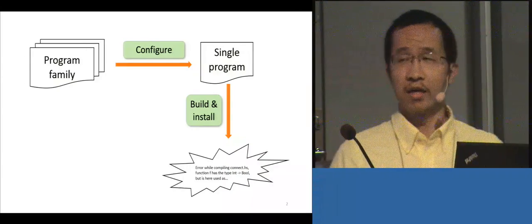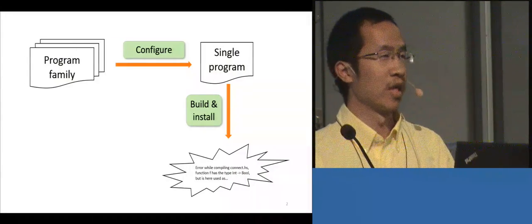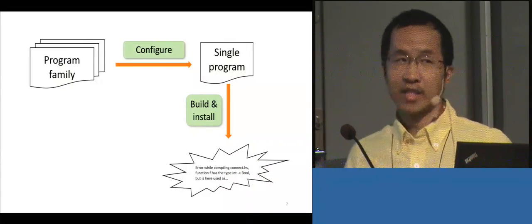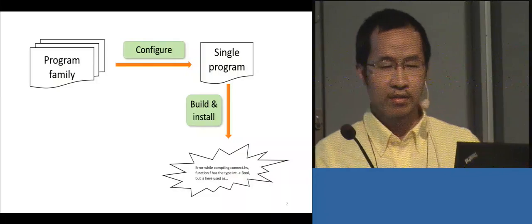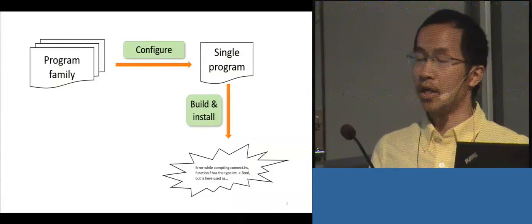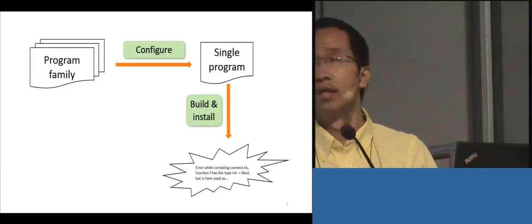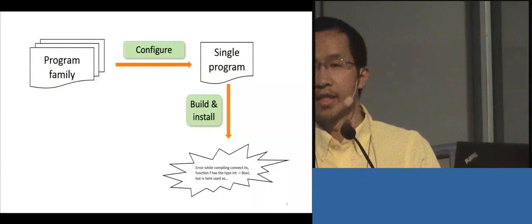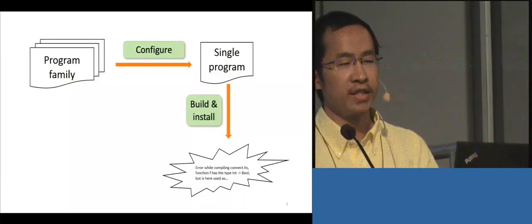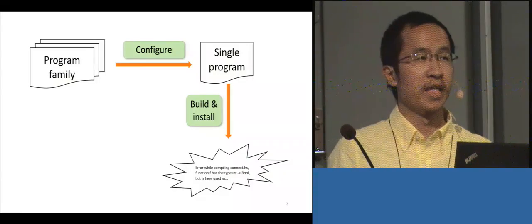If you ever want to figure out what the problem is, you find that the error message is very hard to read and understand, like the message presented here. The question is: how can software systems developers potentially avoid this problem? The obvious solution is that they generate all single programs and then apply the build and install process.